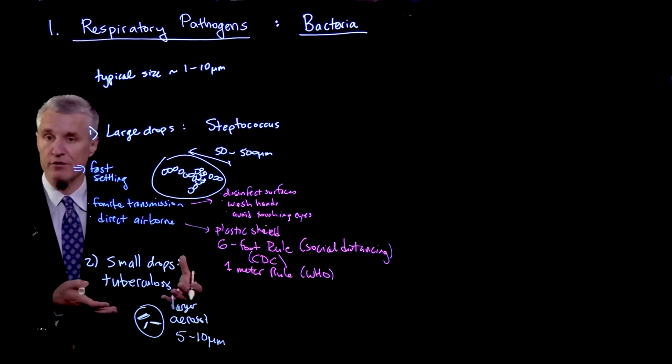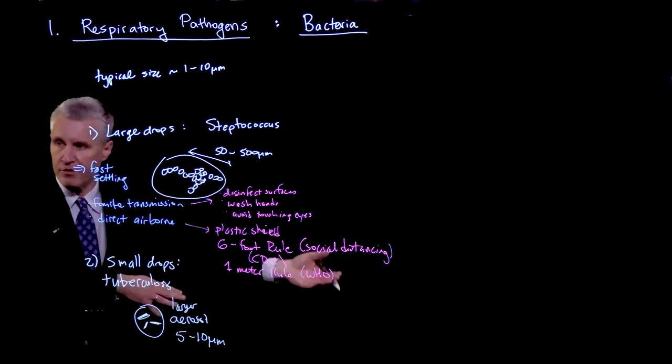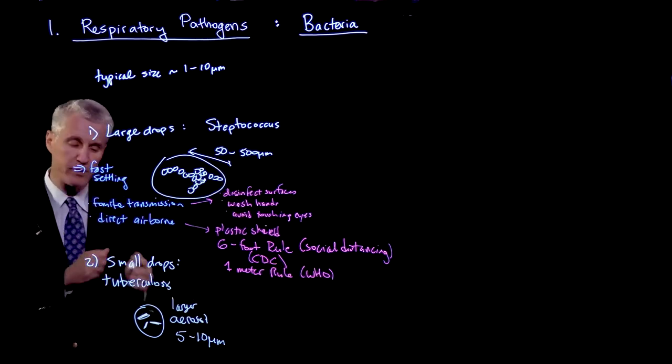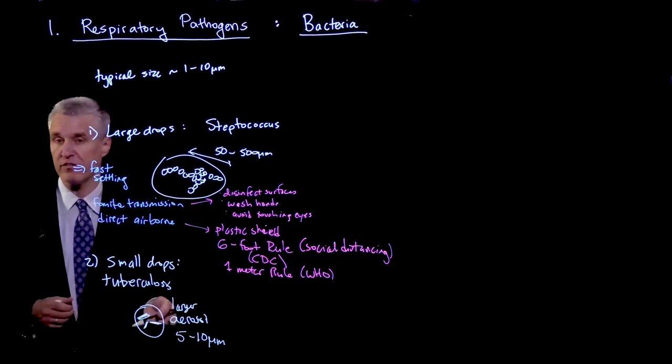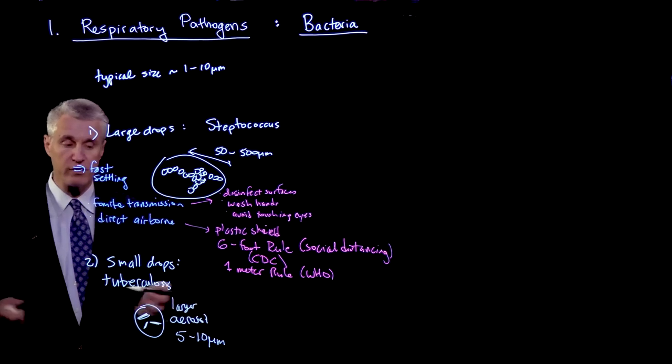By larger, I mean in the range of sort of 5 to 10 microns. So of course, tuberculosis also can be contained in much larger droplets, which fall to the ground, as we've just been describing. But tuberculosis is a bit different in that these individual bacteria could be transmitted airborne in larger aerosol droplets.